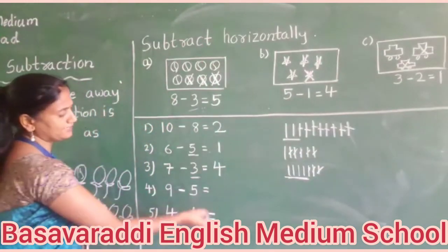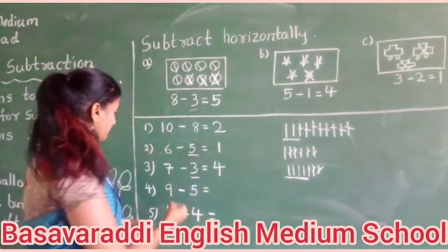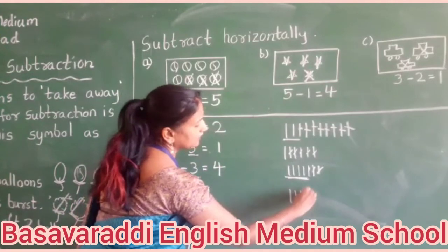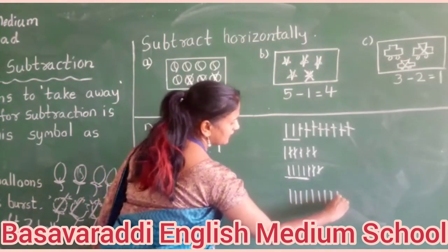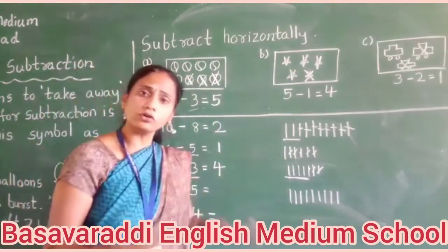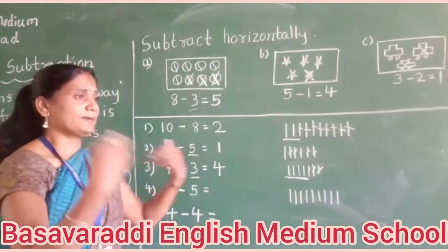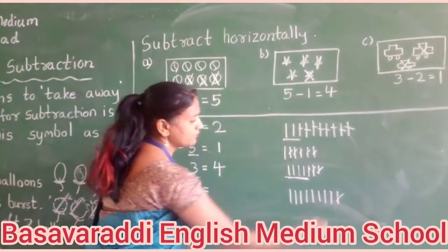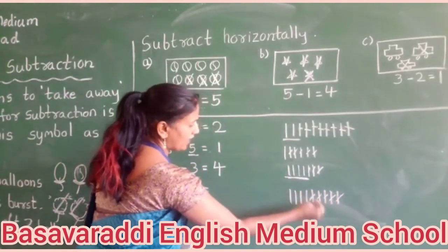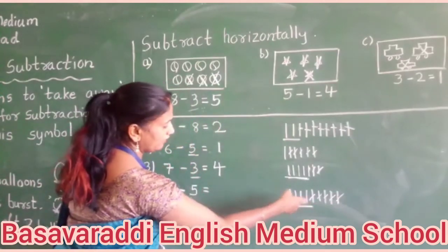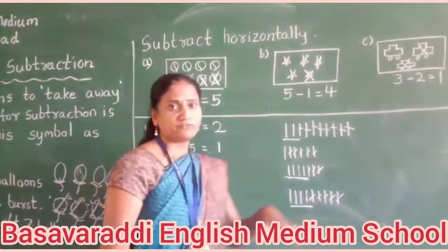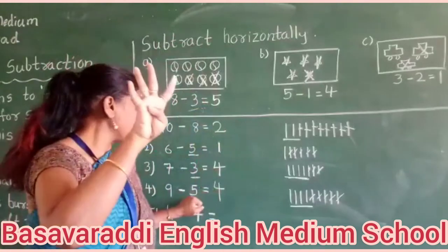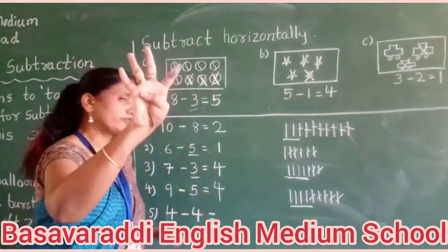Fourth one: nine minus five. Nine: one, two, three, four, five, six, seven, eight, nine. In that, cross five — somebody has taken away five. Cross: one, two, three, four, five. Remaining four: one, two, three, four. I am holding nine fingers, fold five, and remaining with me is four: one, two, three, four.